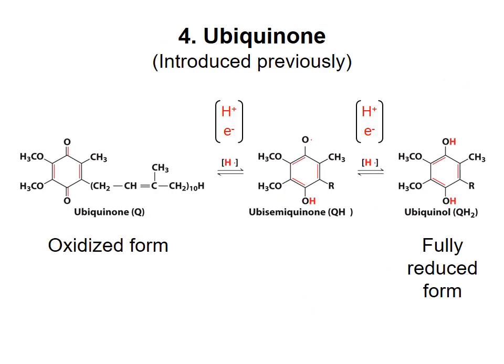I introduced ubiquinone, also called coenzyme Q, or simply Q, in an earlier video. The quinone group can acquire two electrons, along with two protons, to go from Q to QH2. Note that a long hydrophobic chain of carbon atoms is attached to the quinone. This part of the molecule means that coenzyme Q is confined to membranes, specifically the inner mitochondrial membrane. But coenzyme Q is not a prosthetic group — it freely diffuses in the lipid bilayer and associates with proteins temporarily to gain or lose electrons.